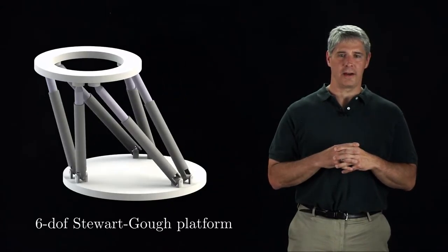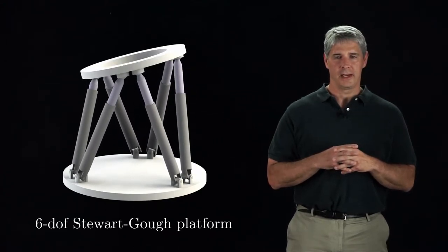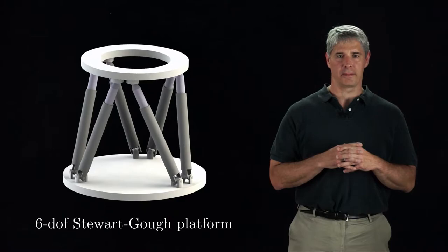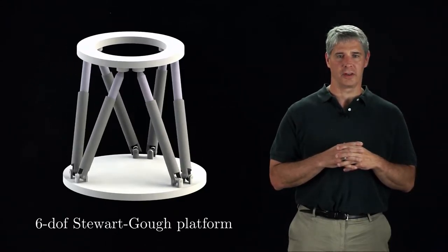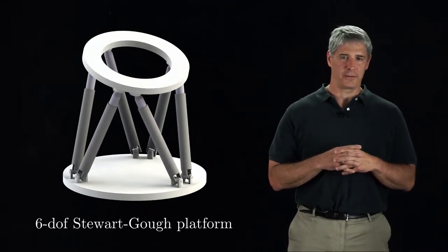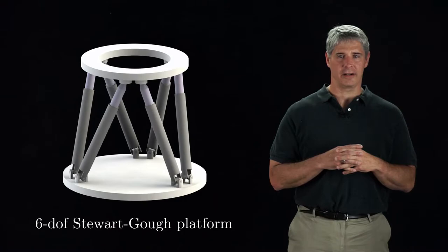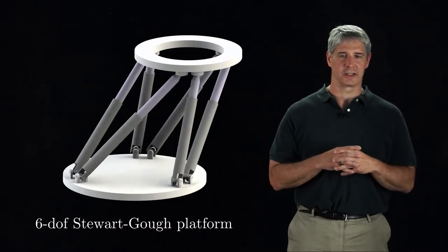The final example is the Stewart platform, which moves with the full 6 degrees of freedom of a rigid body. Each of the 6 legs is actuated by a prismatic joint. At one end of each leg is a spherical joint, while the other end has a spherical or universal joint. The Stewart platform is popular for applications like aircraft simulators, since it can move the virtual cockpit with all 6 degrees of freedom.